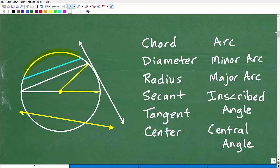So here's what we're going to define here. You can see I have chord, diameter, radius, secant, tangent, center, arc, minor arc, major arc, inscribed angle, and central angle. So if you want to pause the video and think about it for a second, which is which, that's what we're going to be doing. We're just going to take these terms and match it to the part of the circle.